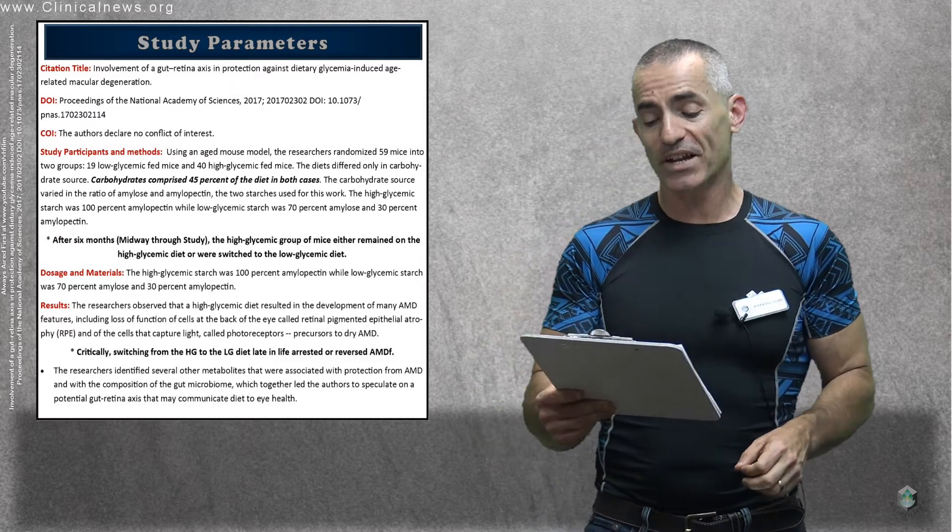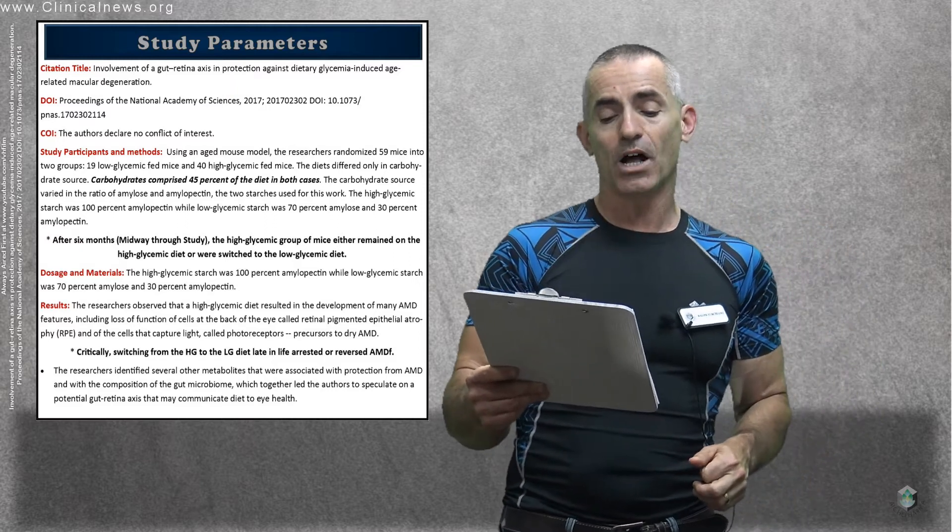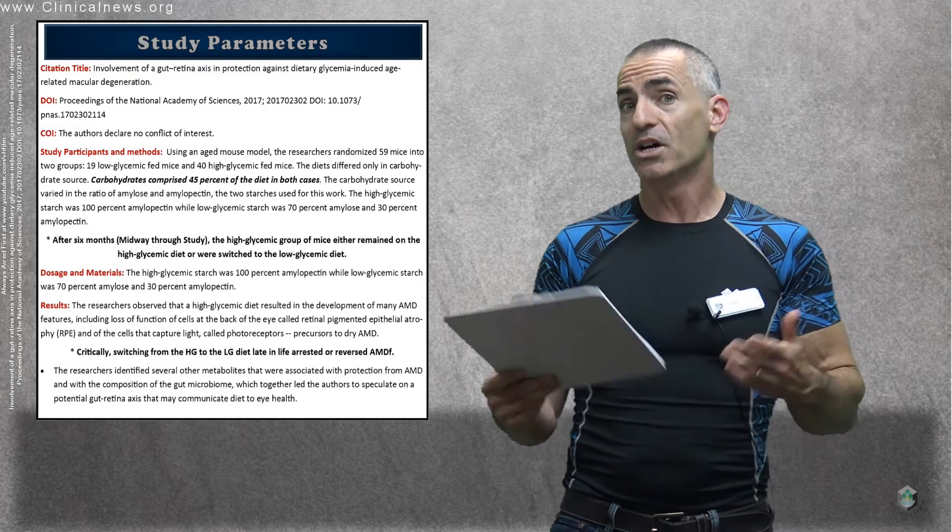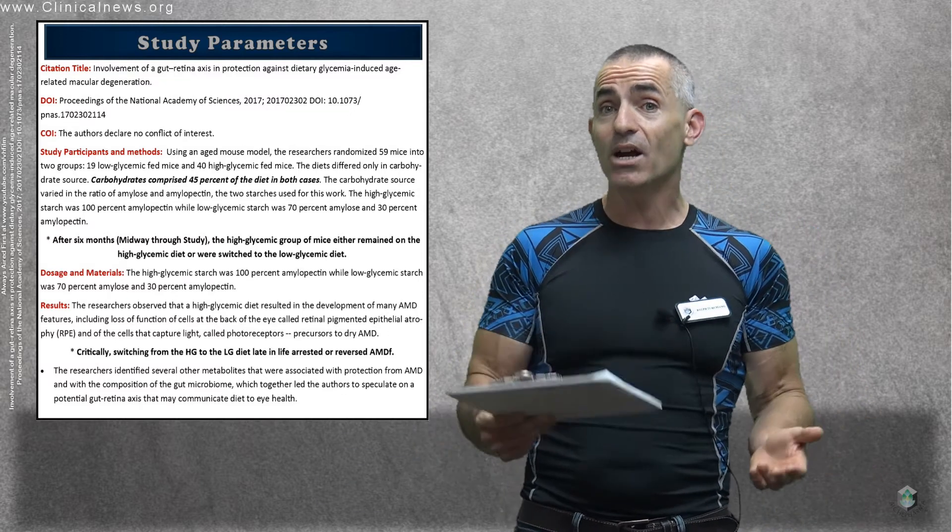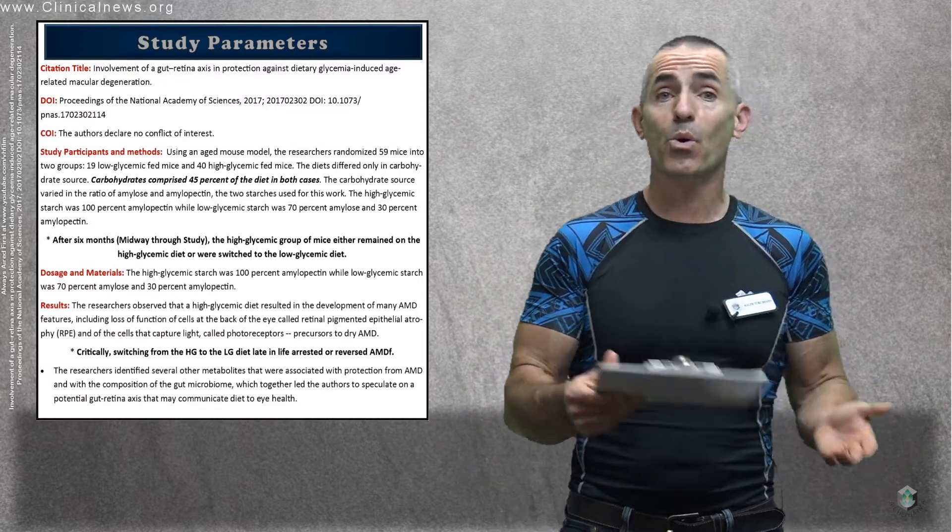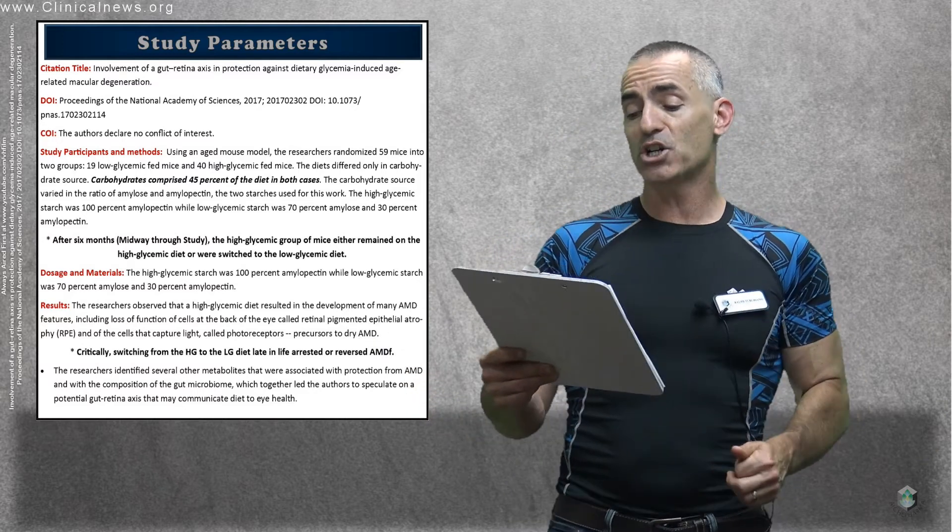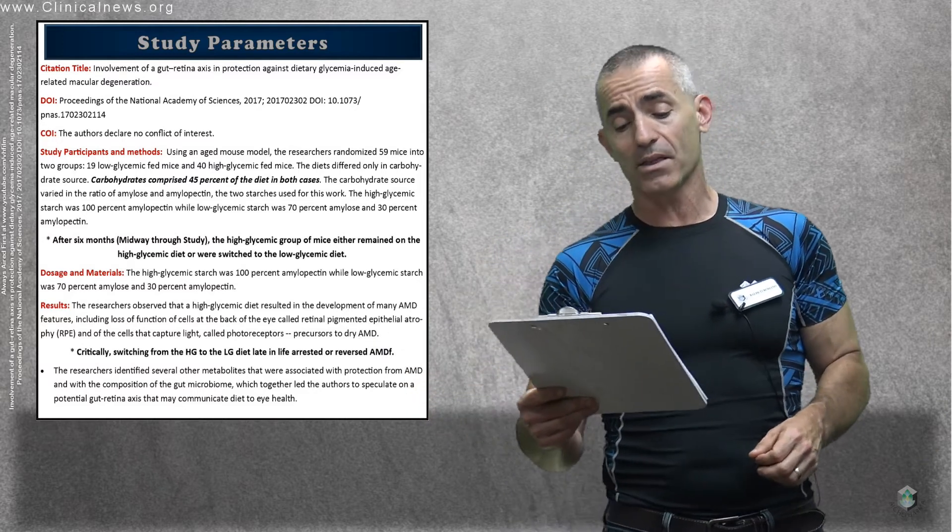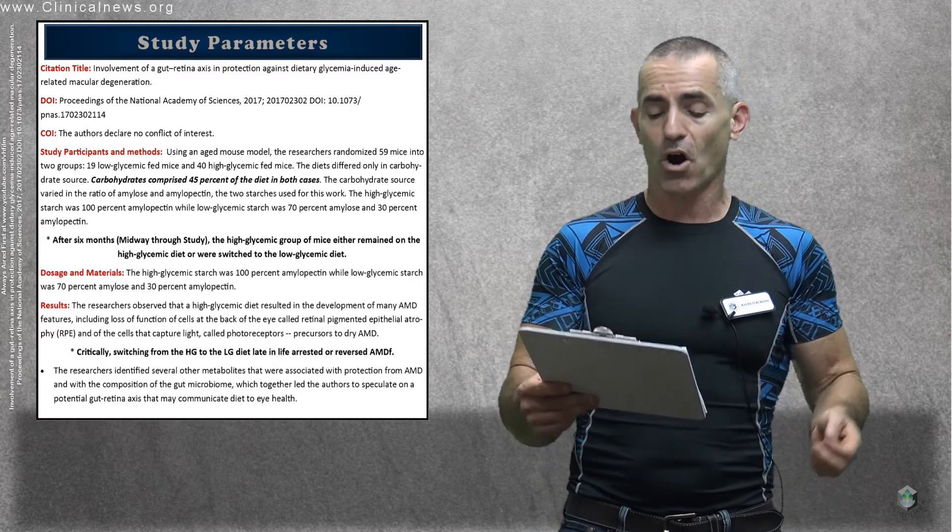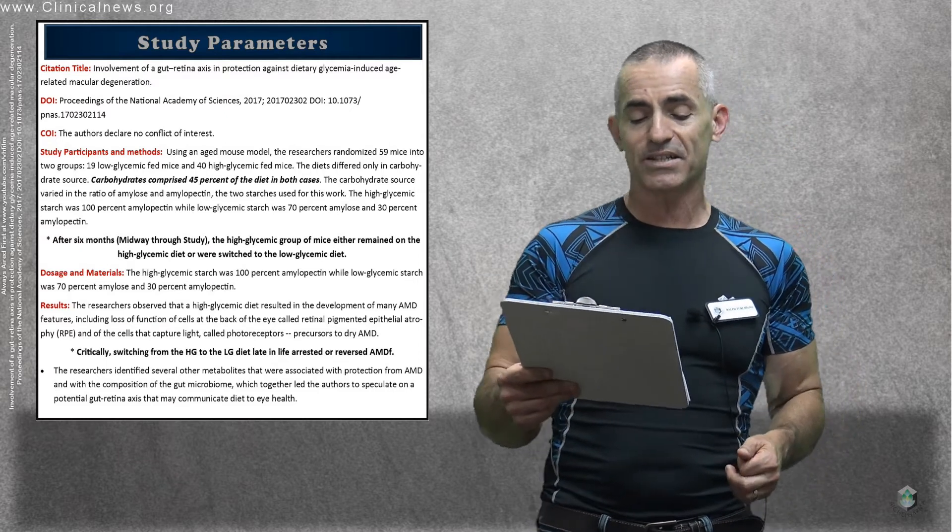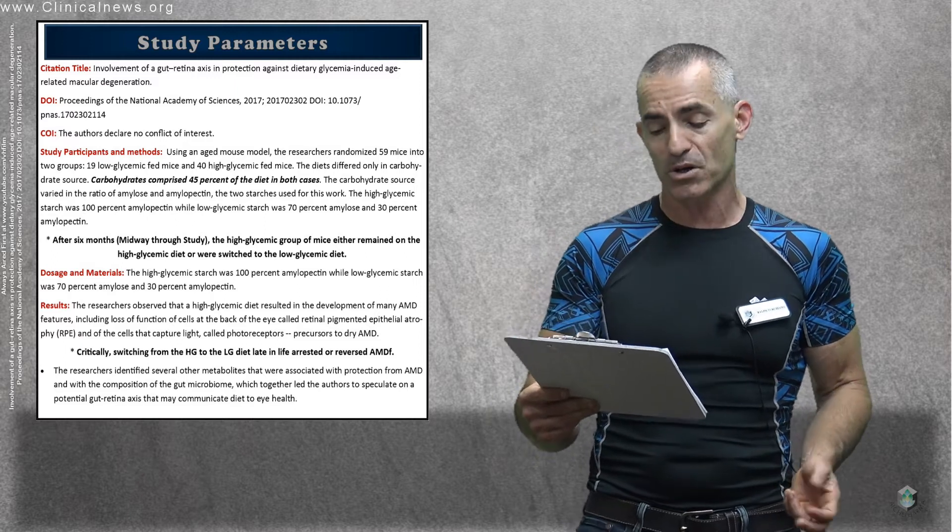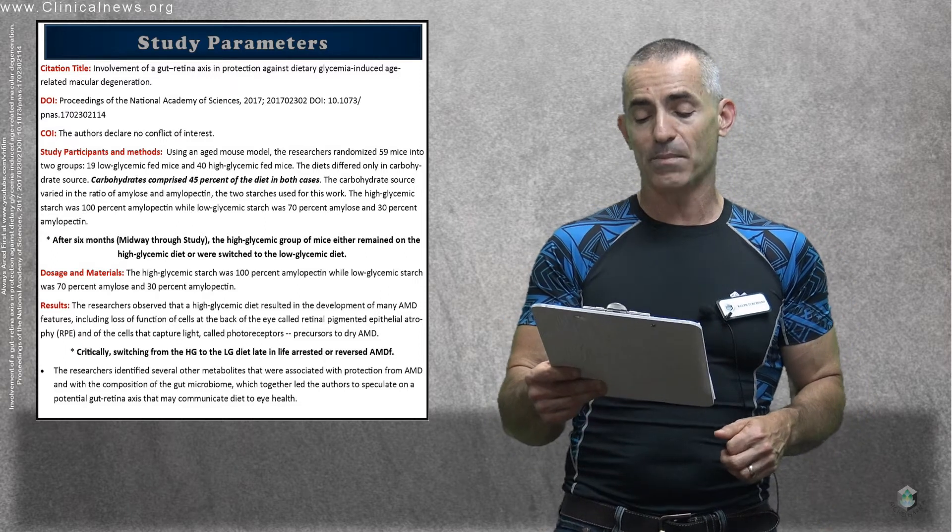Results in regards to that end up being fascinating. The researchers observed that a high-glycemic diet resulted in development of many AMD features. So is AMD really an age thing, or just what happens when you eat a poor diet for a long period of time? Including loss of function of cells in the back of the eye called retinal pigmented epithelial atrophy, otherwise known as RPE, and of the cells that capture light called photoreceptors, precursors to dry AMD.